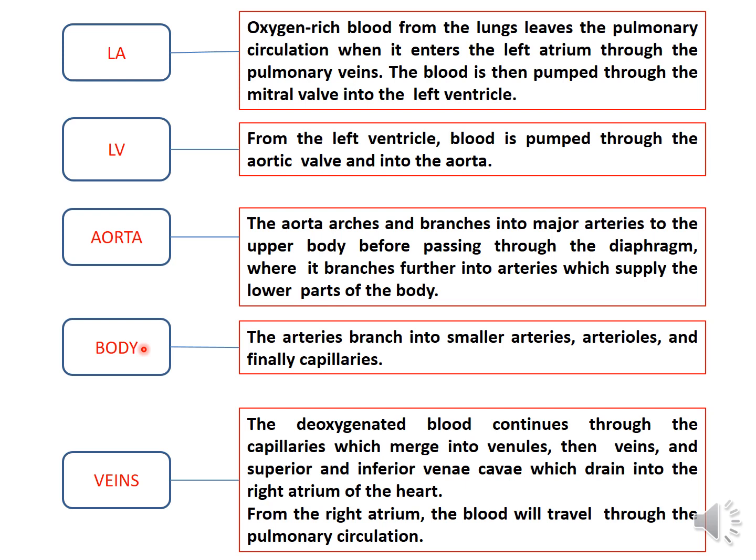In the body, the arteries branch into smaller arteries, arterioles, and finally capillaries. In the capillaries, gas exchange takes place: oxygen is released into the tissues and carbon dioxide is picked up from the tissues. This gas exchange is the opposite of what happens in the lungs, where carbon dioxide is expelled and oxygen is picked up. After gas exchange, the blood becomes deoxygenated.